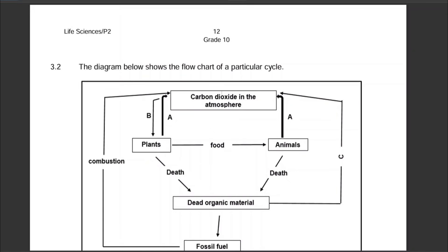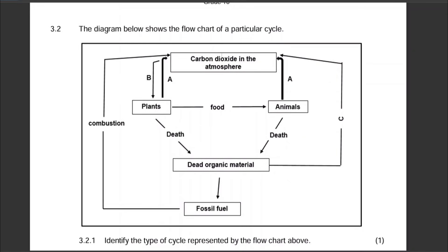I know most learners don't like the cycles, but they are not difficult. I would say the nitrogen one is more complicated. The water cycle, the carbon cycle, and the nitrogen cycle — those are the three main ones. They're not complicated, but you need to find a way of understanding what is happening in each cycle, because you will be asked in an exam — just like this question, which is from a previous November question paper.